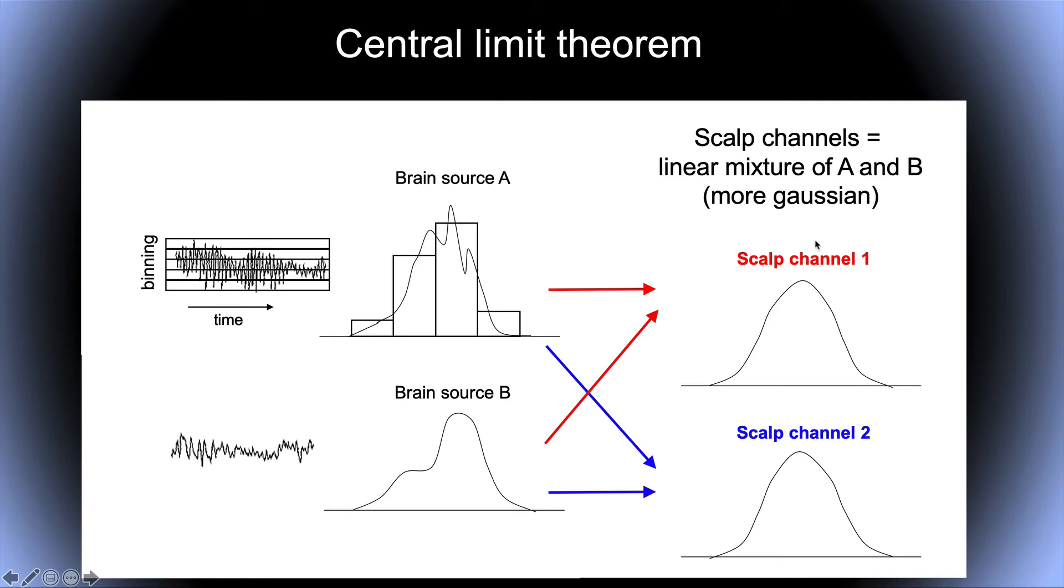What ICA can do is that it starts from the scalp channels, and then it's going to rotate axes in multi-dimensional space, so as to make the projection as non-Gaussian as possible in order to recover the sources.